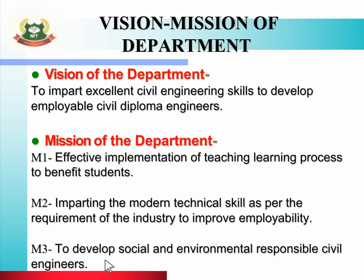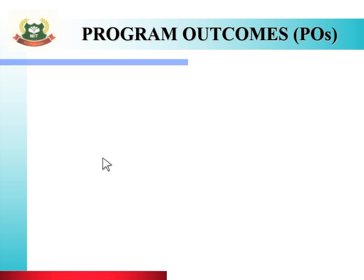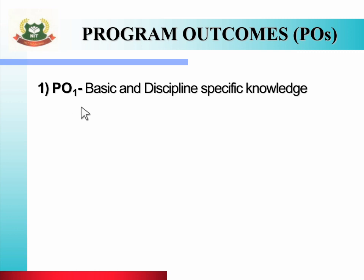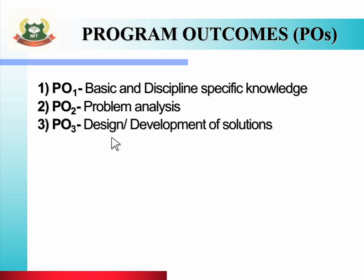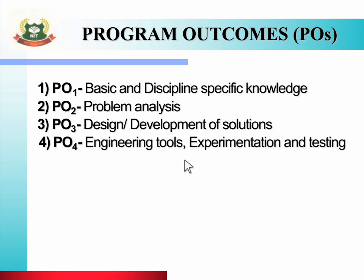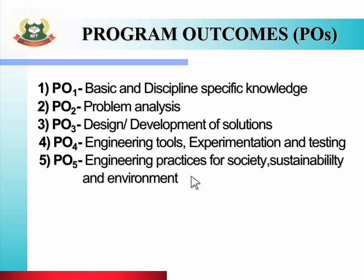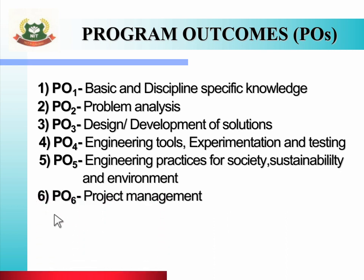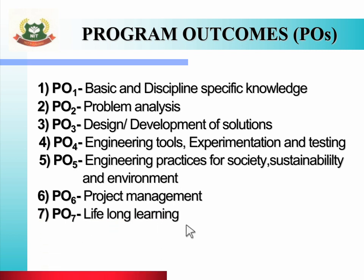To achieve this vision and mission, there are seven program outcomes. PO 1 is basic and discipline specific knowledge. PO 2 is problem analysis. PO 3 is design development of solutions. PO 4 is engineering tools, experimentation and testing. PO 5 is engineering practices for society, sustainability and environment. PO 6 is project management. And PO 7 is lifelong learning.